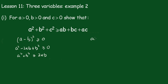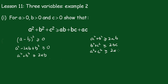Let's write this over here. So, a squared plus b squared is greater than or equal to 2ab, which means, of course, that b squared plus c squared must be greater than or equal to 2bc. And likewise, we have that a squared plus c squared is greater than or equal to 2ac.